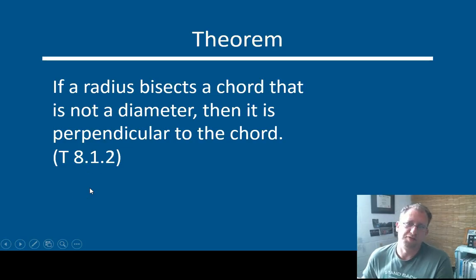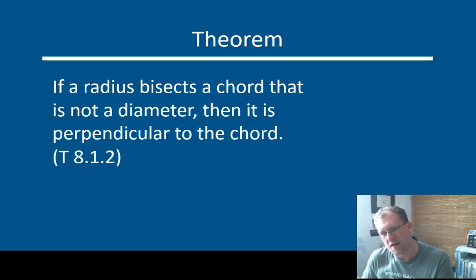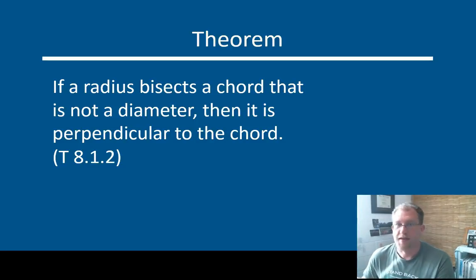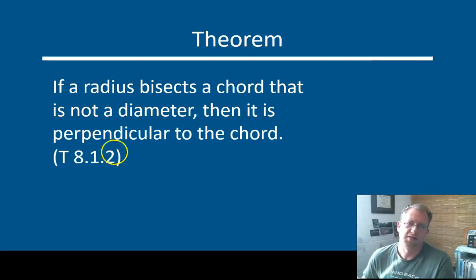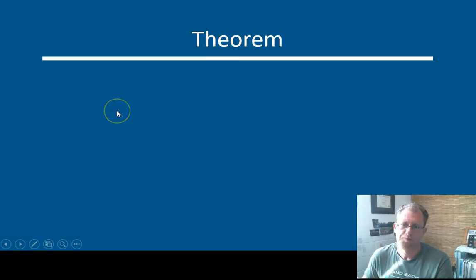That exact same theorem can be run backwards. So we said: if a radius intersects a chord at a 90-degree angle, then it bisects the chord. We can also say: if a radius bisects a chord that's not a diameter, then it is perpendicular to the chord. This is the exact same information — it's just going at it another way.